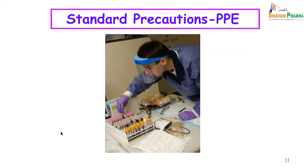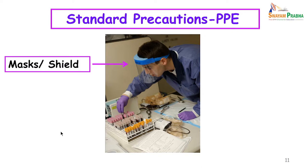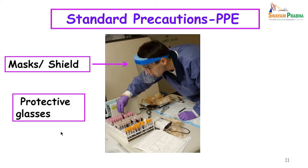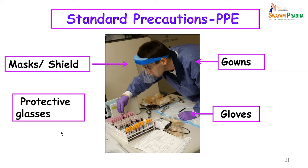Standard precautions also involve using personal protective equipment. Masks and shields should be worn whenever you expect a splash, and protective glasses can also be worn in such situations. Gowns should be worn when coming in contact with an infectious patient, and gloves should be worn whenever you expect contact with blood or body fluids.